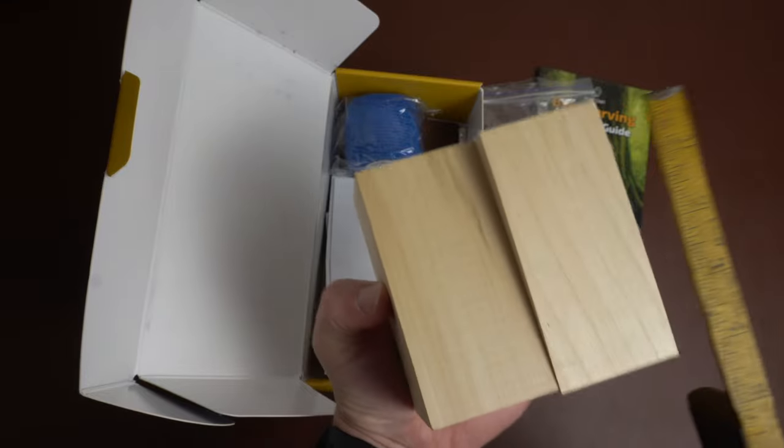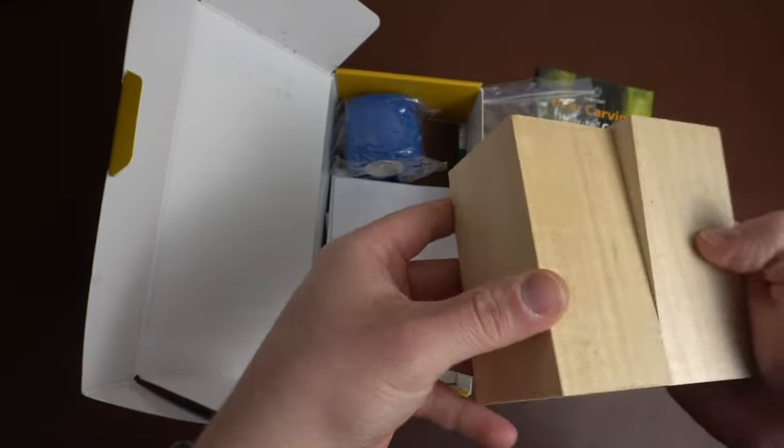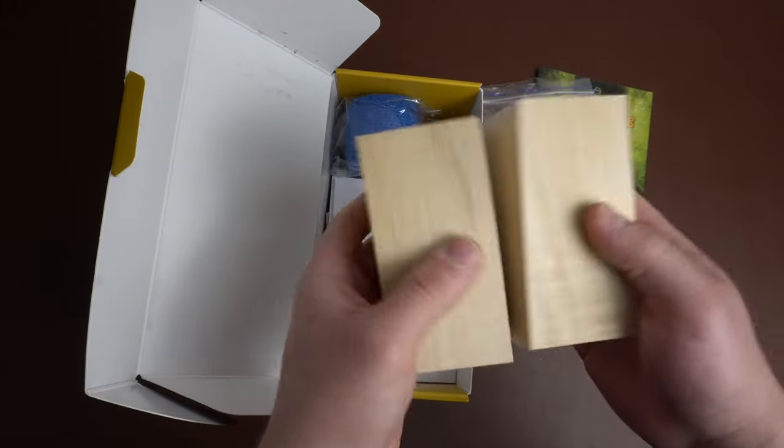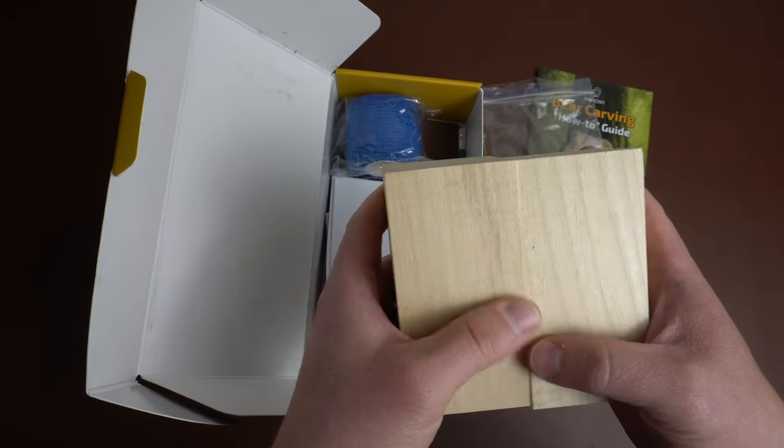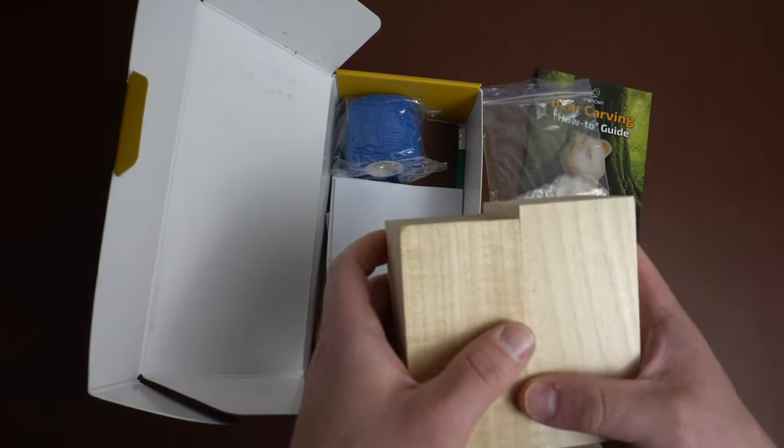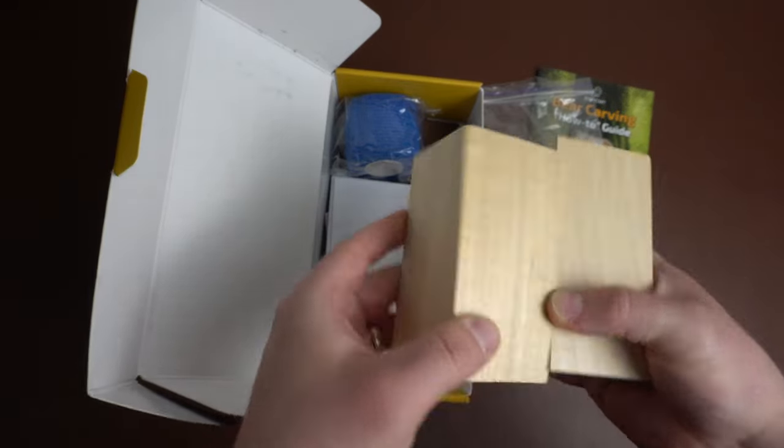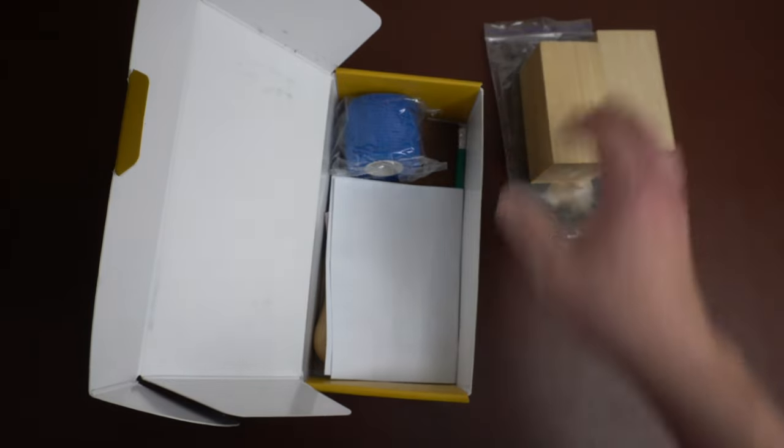Basswood blocks are two by two by four. I've used their wood before and it was pretty good, on par with most of the wood you're going to get off of Amazon. It's not bad, it's pretty good wood. Easy to carve, soft enough. It definitely does the job.